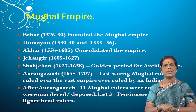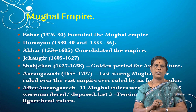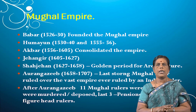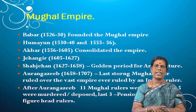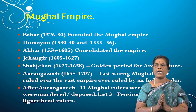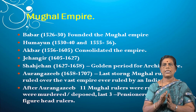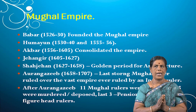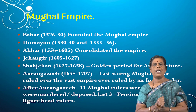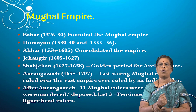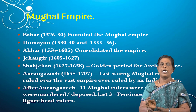Now let us see a brief explanation about the Mughal Empire. The first ruler was Babur. He founded the Mughal Empire in 1526 and ruled India up to 1530. In these four years he worked to establish and consolidate the Mughal Empire. After Babur, his successor Humayun ruled from 1530 to 1550 and again from 1555 to 1556.